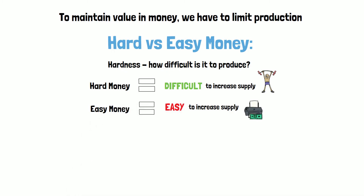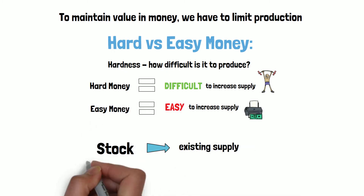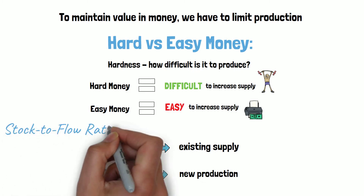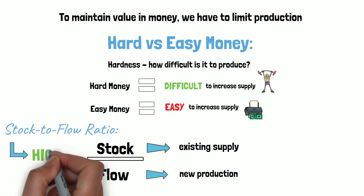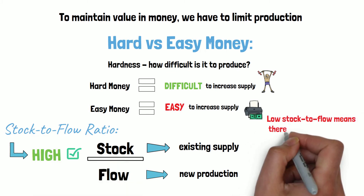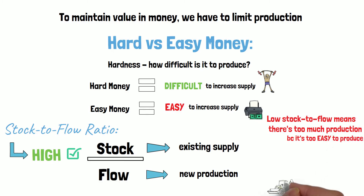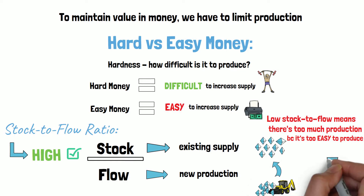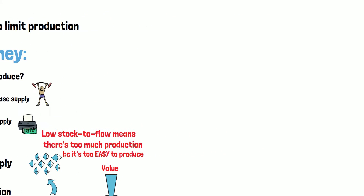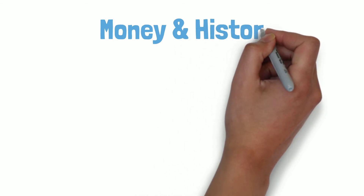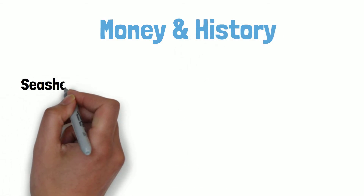The hardness of money depends on stock, which is existing supply, and flow, which is new production — giving us the stock-to-flow ratio. For any currency, we want a high stock-to-flow ratio. If the ratio is low, that means it's easy to produce. If society chooses to hold an easy money, producers make more of it, supply increases, meaning more people have it and the value of that currency is eventually destroyed.